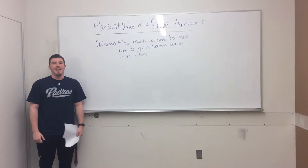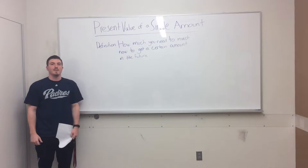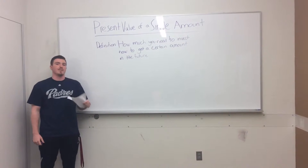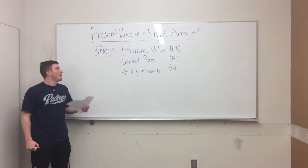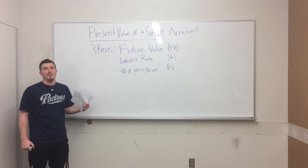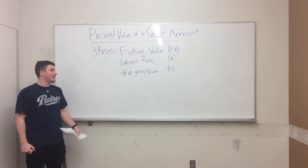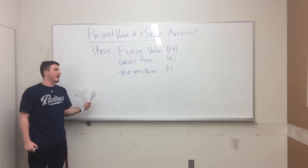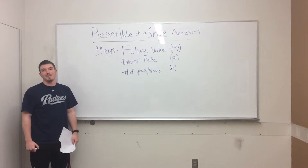My name is Kenny Kenyon, and for our next topic we're going to be talking about the present value of a single amount. This is how much you need to invest right now to get a certain amount in the future. Before you can solve for the present value, you're going to need three things: the future value — how much money you're going to want in the future — the interest rate that is going to be applied, and the number of periods that interest will be applied for.